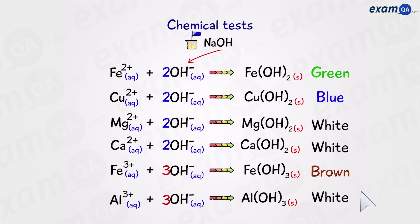These are all of the colours for the different metal hydroxides. However there's one more special rule. With aluminium hydroxide it's currently white, but if we keep adding sodium hydroxide it will go colourless. And this is the only one that does that.